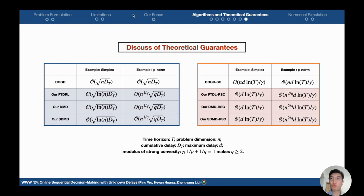We present the regret results in different settings here for comparisons. We can see our algorithms outperform previous works in the Simplex and the p-th norm settings.